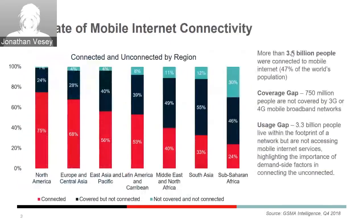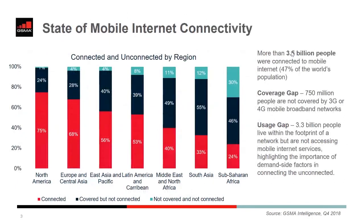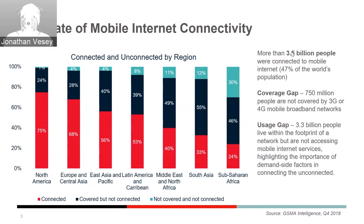The mobile internet is connecting people to new opportunities and life-enhancing services. It's driving both economic growth and advancing progress towards the United Nations Sustainable Development Goals. For most of the world's population, mobile is still the primary and only way to access the internet. The mobile industry connects today over 3.5 billion people to the internet around the world. The percentage of people living outside of a broadband network has more than halved since 2014.